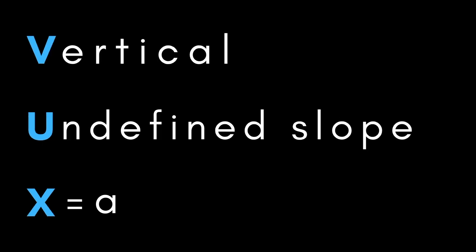Now, the V in VUX is for vertical, and U means that vertical lines have undefined slope. Contrary to horizontal lines, vertical lines are represented by the equation x equals a number, hence the X in VUX.